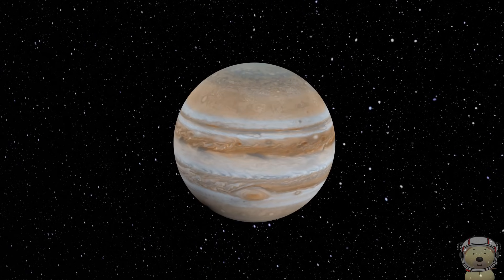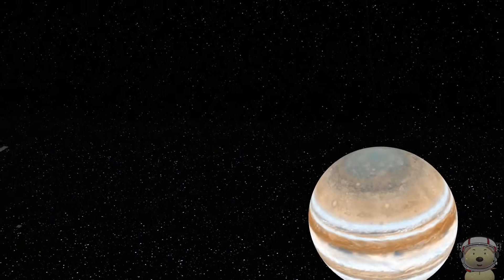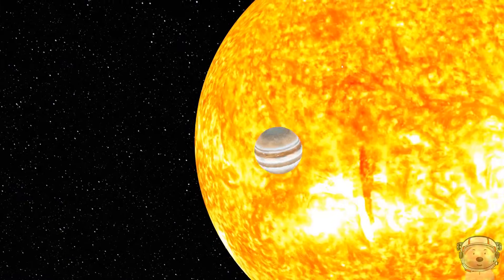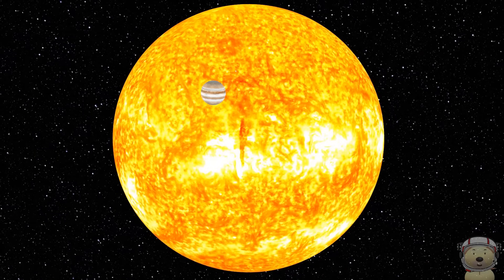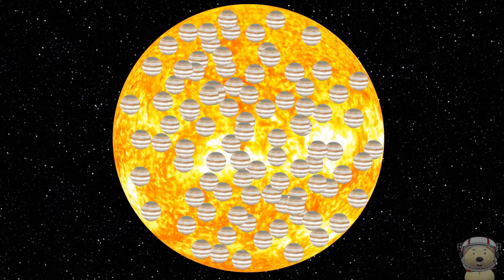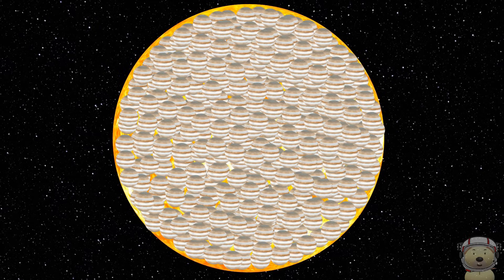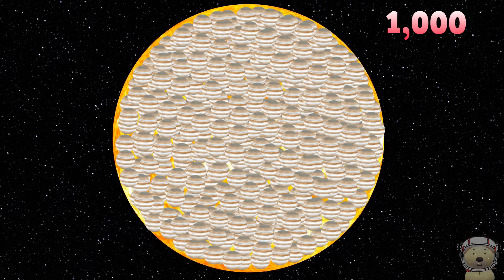Let's move Jupiter, the largest planet in our solar system, to the Sun. Fill the Sun with Jupiters. The Sun could hold around 1,000 of planet Jupiter.